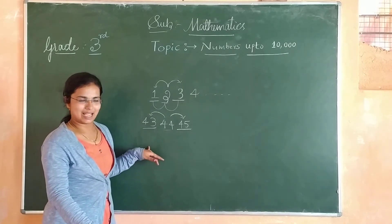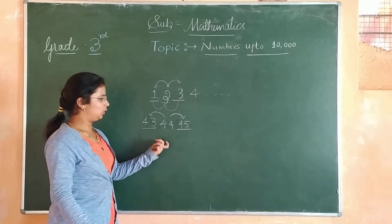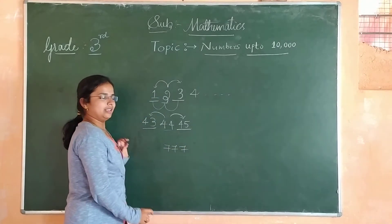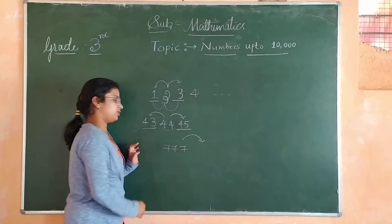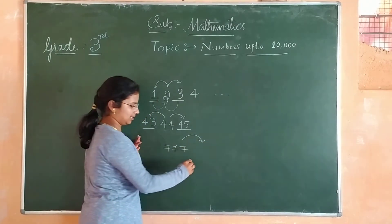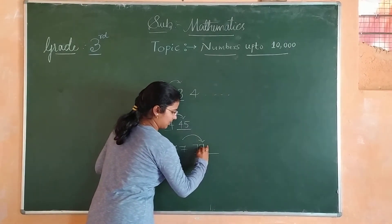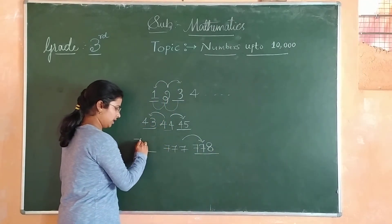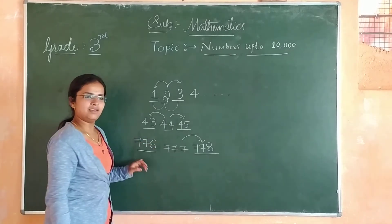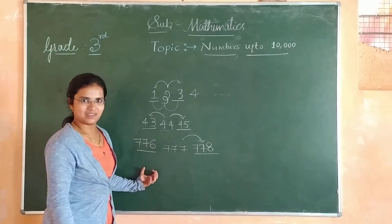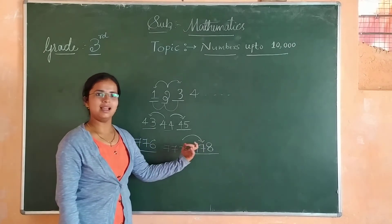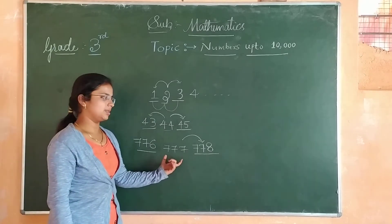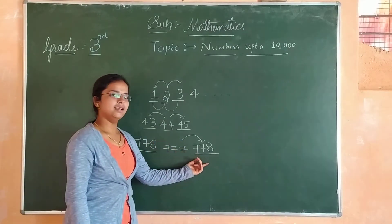Now I have shown you examples for after number and before number using 2-digit numbers. Now I would like to show you using a 3-digit number. If we want the after number of 777, we add 1 to get 778. If we want the before number of 777, we subtract 1 to get 776. So 776 is the before number of 777, 778 is the after number of 777, and 777 is the between number of 776 and 778.